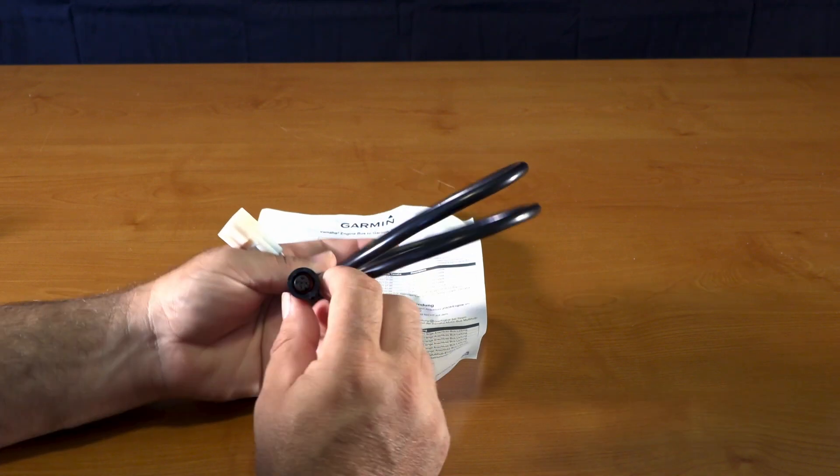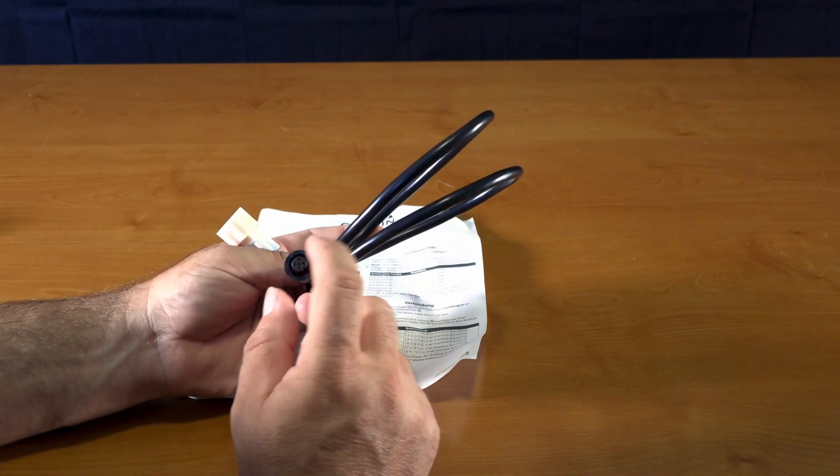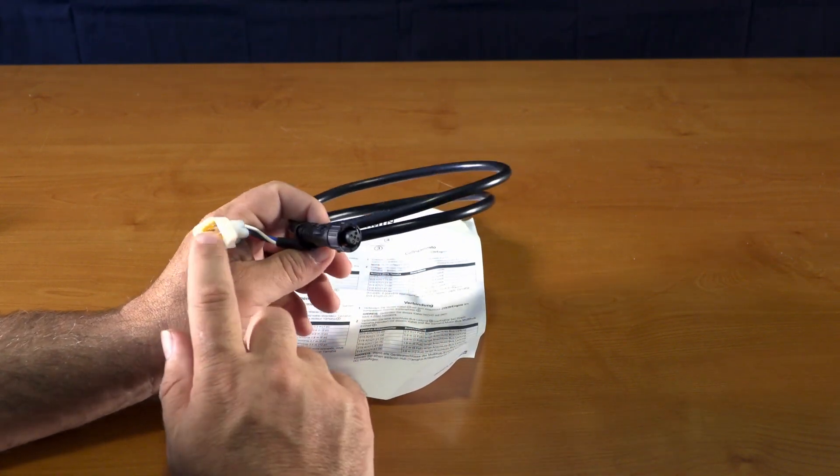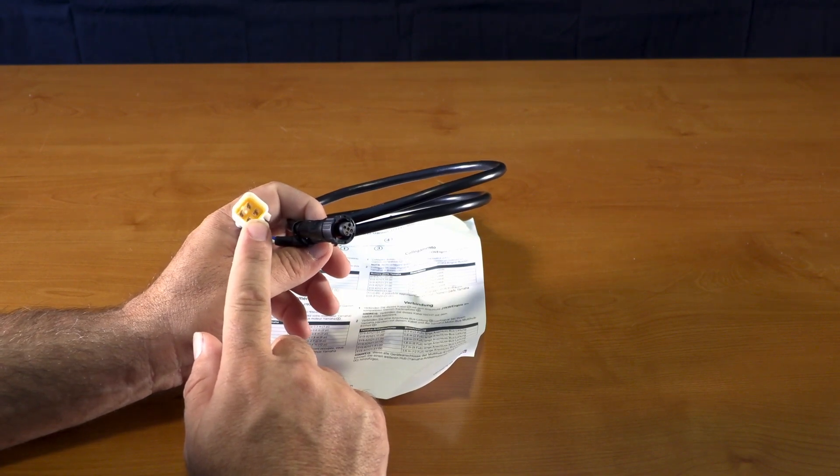You have the 5 pin connector. Again, this is just like the NMEA 2000 connector, except this will hook directly to the chart plotter. Again, this hooks to your Yamaha.